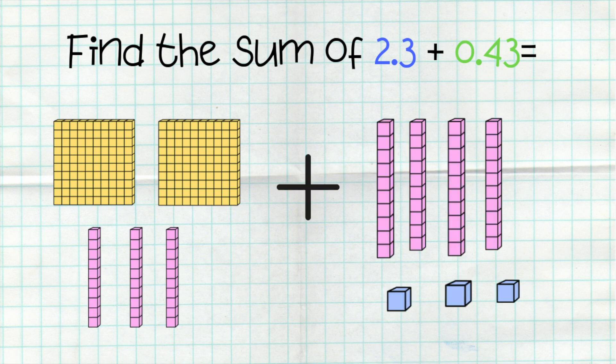Next, I want to add 0.43. Well, I have a four in the tenths place, so I have four-tenths. I have a three in the hundredths place, so I have three hundredths.